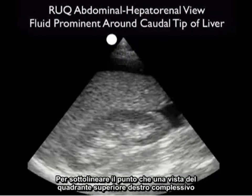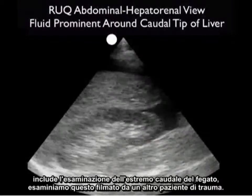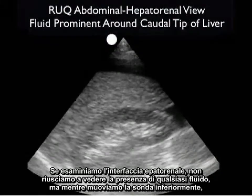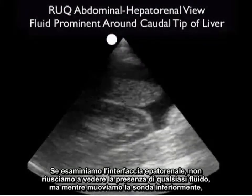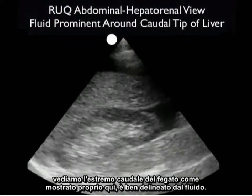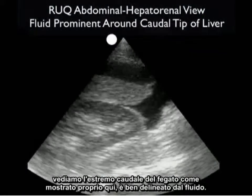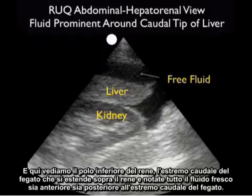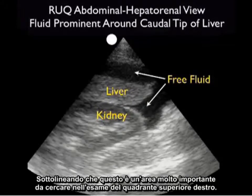To emphasize that a complete Right Upper Quadrant View includes looking at the caudal tip of the liver, let's examine this video clip from another trauma patient. If we look at the hepatorenal interface, we fail to see any fluid, but as we move the probe inferiorly, we see the caudal tip of the liver is well outlined by fluid. Here we see the inferior pole of the kidney, the caudal tip of the liver extending above the kidney, and fresh fluid both anterior and posterior to the caudal tip — making this a very important area to evaluate.